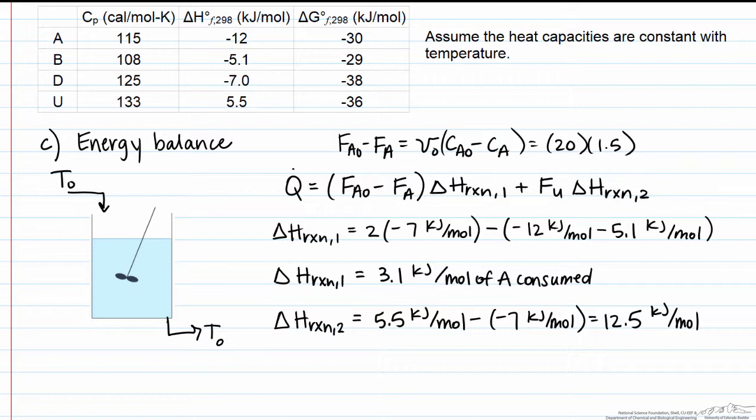We furthermore know that the molar flow rate, Fu, is equal to the volumetric flow rate times the concentration of U exiting the reactor. That was solved for in our previous problem, and it is equal to 0.9 moles per liter. Now we have all the values on the right hand side of this equation, and we can solve for Q dot.